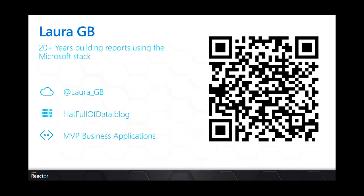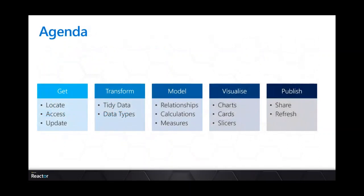The agenda for today: creating a Power BI report has five steps. We start by getting data — working out where the data is in your organisation. The larger the organisation, the harder it will be to find data in the right format and get access to it. Then we move on to transforming the data — tidying it up, getting your data types right. Then modelling — getting the relationships, bringing the calculations, doing the measures. Then comes the pretty bit, the visualising: drawing charts, cards, putting in slicers. And the final part is publishing the report up onto the service to share with colleagues.